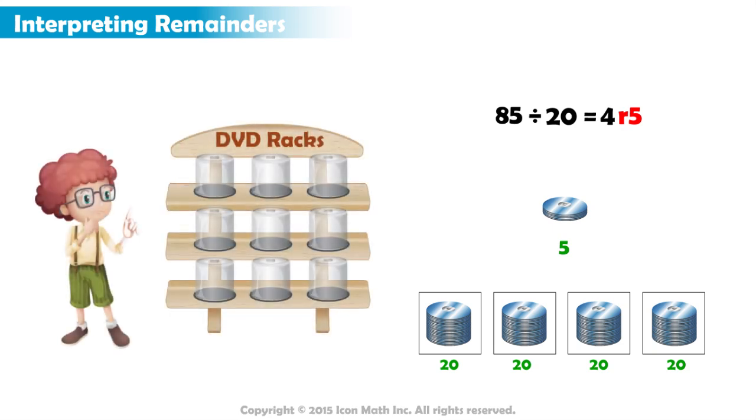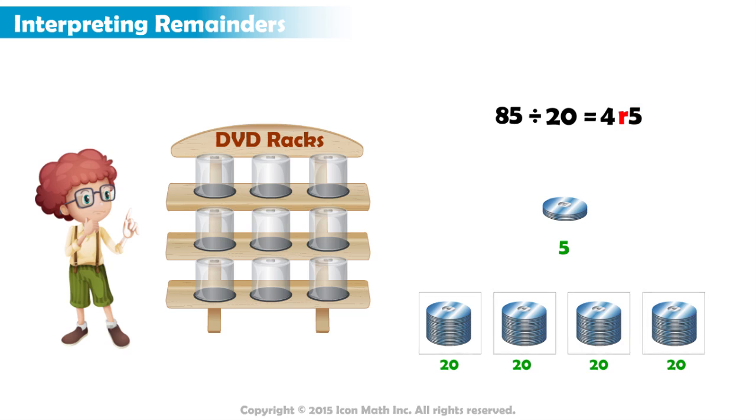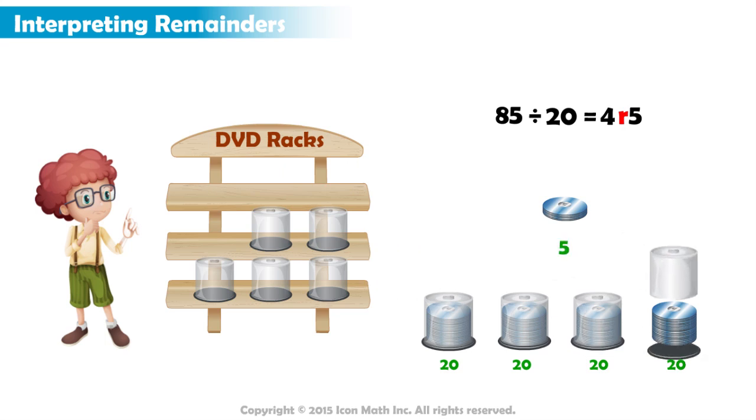So how many DVD racks must Alex buy in order to ensure that all 85 DVDs are on racks? If Alex buys 4 racks, he will be able to have 4 full racks with 20 DVDs on each.